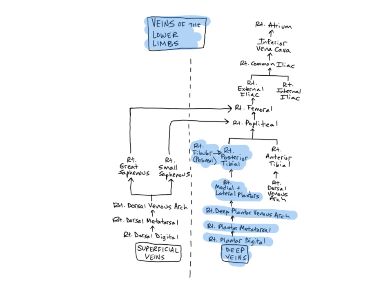The anterior tibial veins originate in the dorsal venous arches, located on the dorsum, or top, of the foot, and ascend deep to the tibialis anterior muscle. They join the posterior tibial veins to form the popliteal veins. The anterior tibials drain the dorsum of the foot, ankle joint, anterior aspect of the leg, knee joint, and tibiofibular joint.